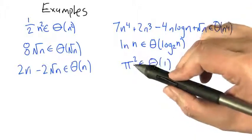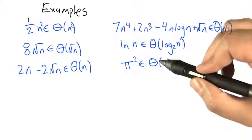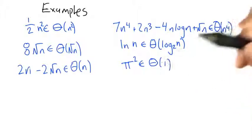Pi squared is something that doesn't grow with n and it ends up being in the set big theta of 1. It's just another constant.